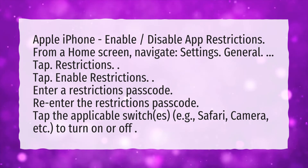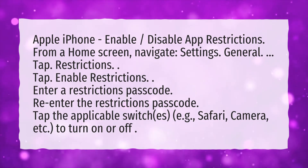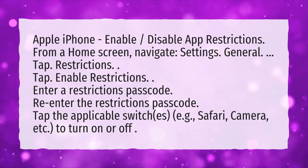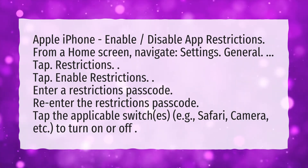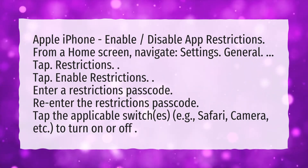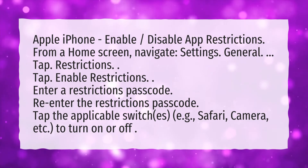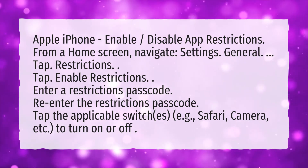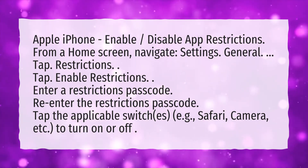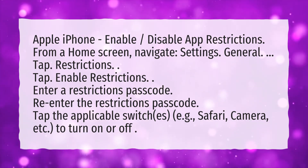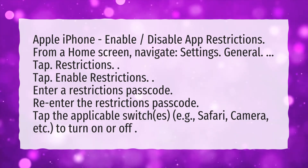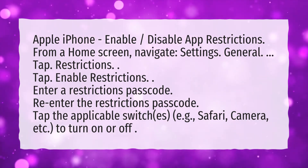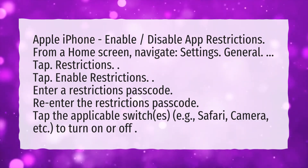Tap Enable Restrictions. Enter a restrictions passcode, then re-enter the restrictions passcode. Tap the applicable switch — e.g., Safari, Camera, etc. — to turn on or off.